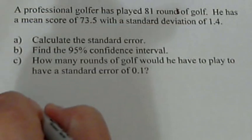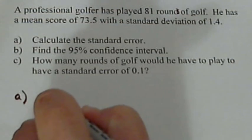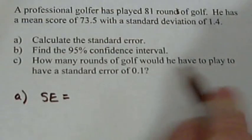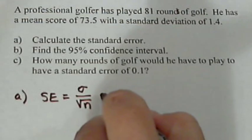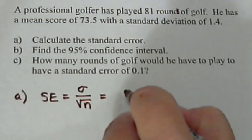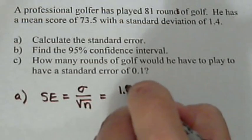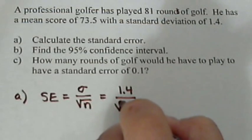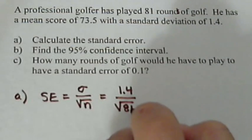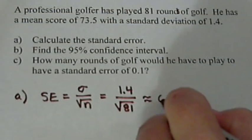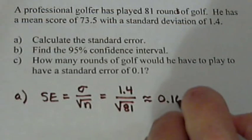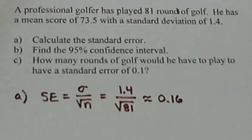So let's calculate the standard error. The standard error is simply the standard deviation divided by the square root of the sample size. So this would be 1.4 over the square root of 81 or 9. And so if we do 1.4 divided by 9, we get a standard error of about 0.16. It's 0.155 repeating, so we'll round it to 0.16.